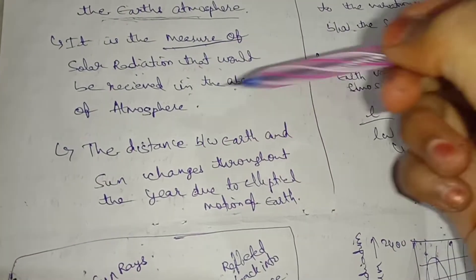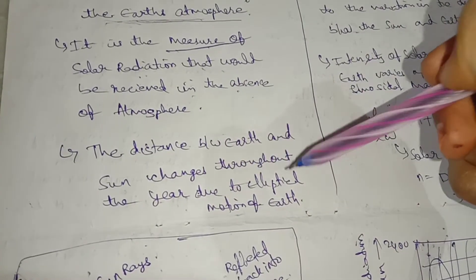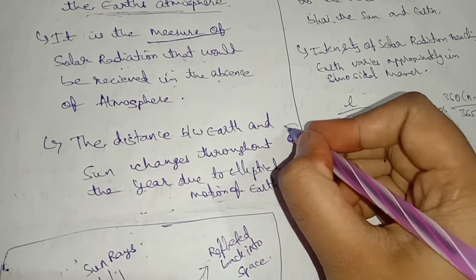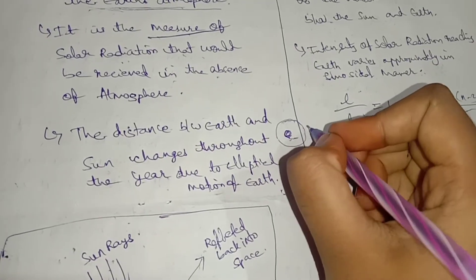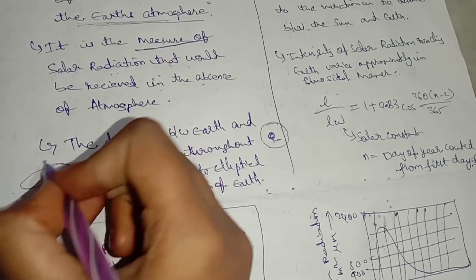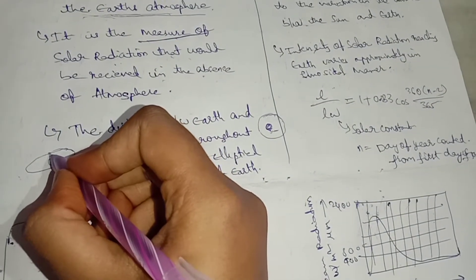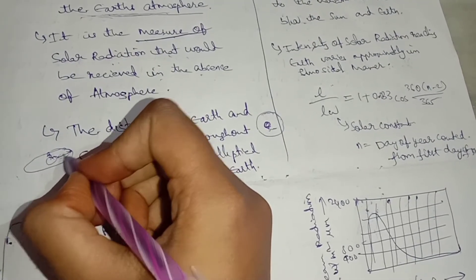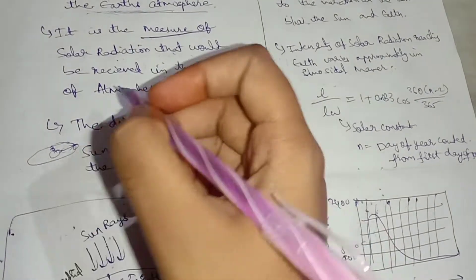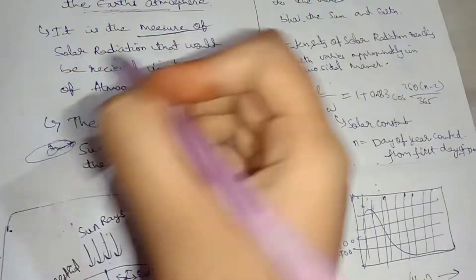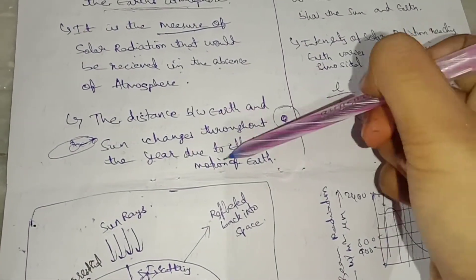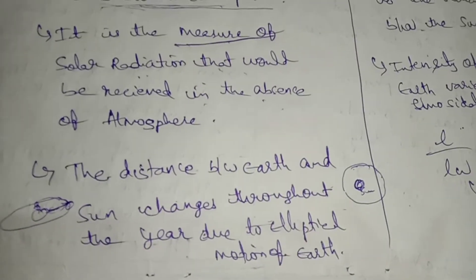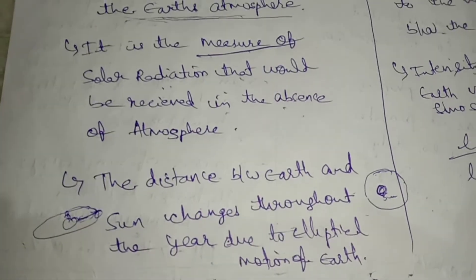The distance between the earth and sun changes throughout the year due to the elliptical motion of the earth. The earth moves in an elliptical path around the sun — not a circle, but elliptical. Because of this, the distance between the sun and earth keeps changing as it moves in elliptical motion.